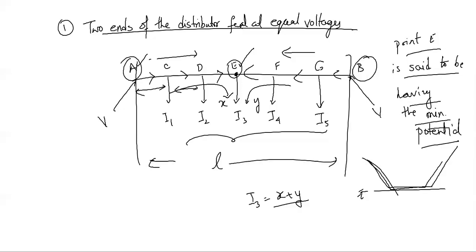The point of minimum potential is generally desired to be located. Consider distributor AB of any length having three concentrated loads at points C, D, and E. Both ends are fed at potential V. Currents I1, I2, and I3 are drawn at C, D, and E respectively.